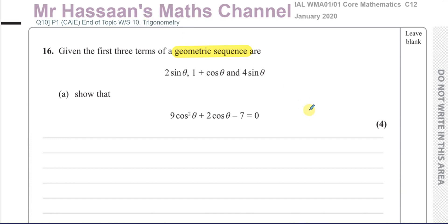We have a geometric sequence, and we know geometric sequences have a common ratio — if you divide a term by the term before it, you get the same ratio for any pair of consecutive terms. You multiply by the same number each time to get to the next term.